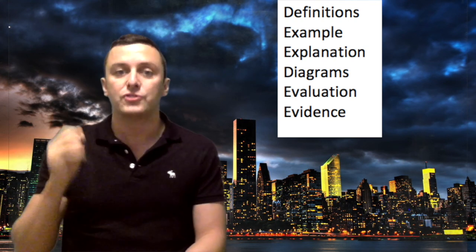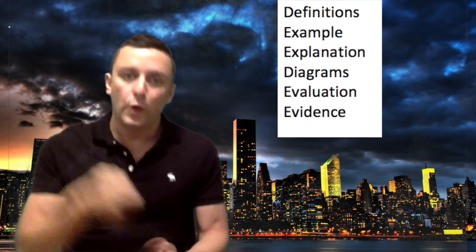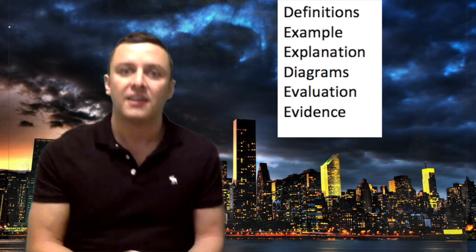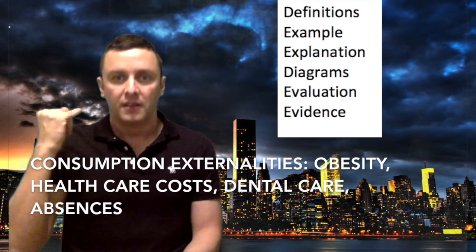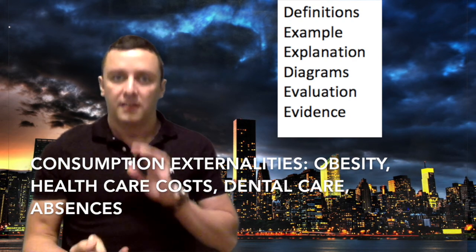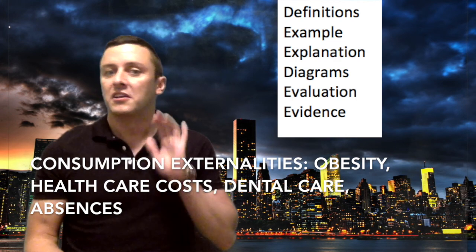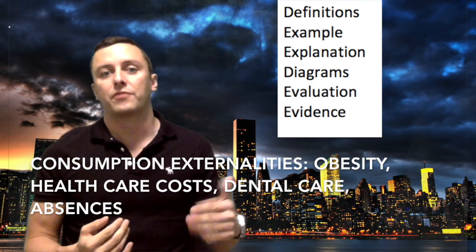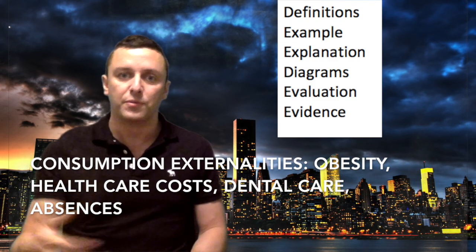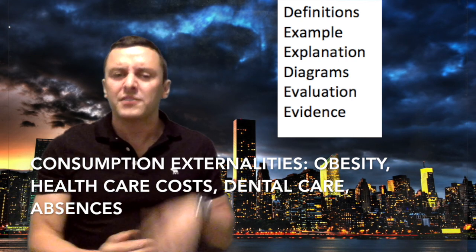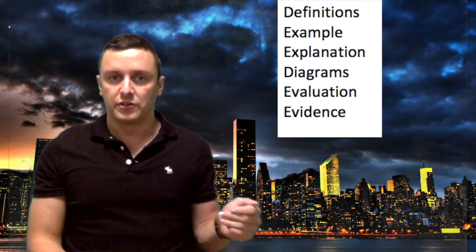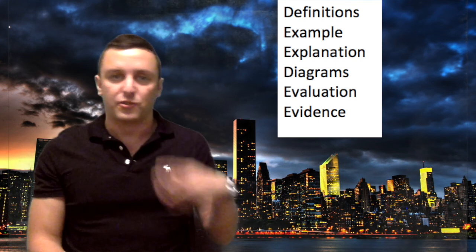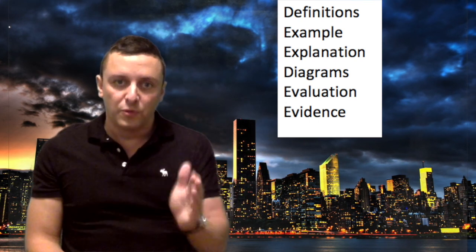Now an example: sugar is an example of a demerit good with negative consumption externalities because sugar creates third-party costs on society. Think about what those third-party costs are - obesity, diabetes, the healthcare costs of these, dental care, and perhaps time taken off work for people who are living an unhealthy lifestyle from consuming too much sugar. This can also be approached in terms of an information failure - does everyone know about the dangers of consuming too much sugar? But maybe that's another topic that perhaps your article focuses on.